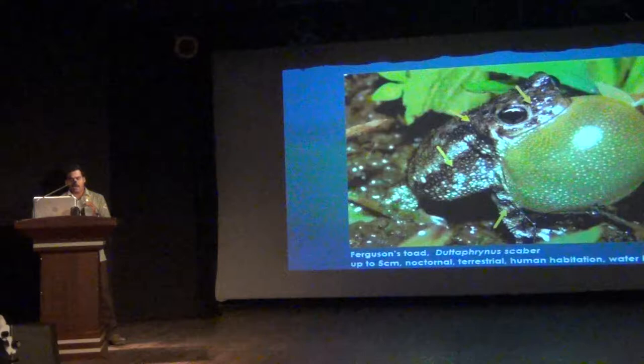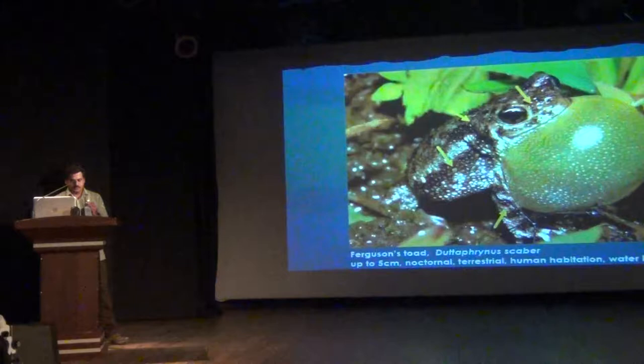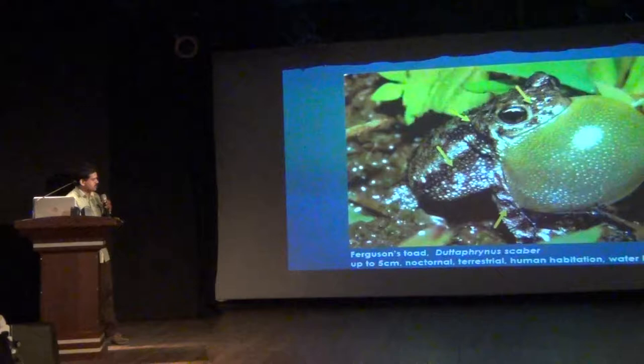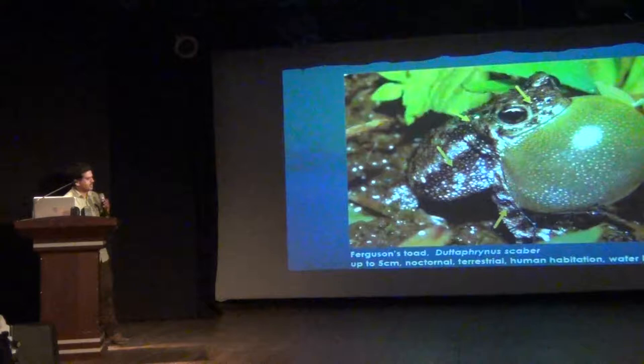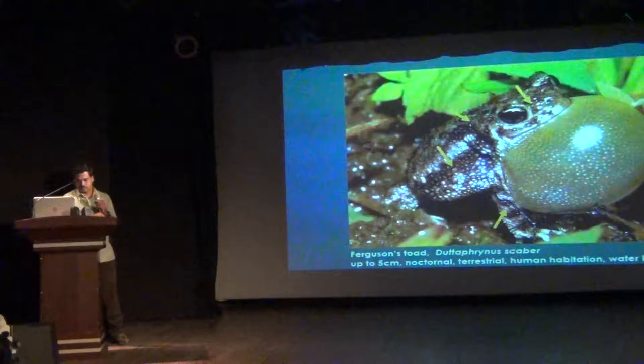Next is Ferguson's toad — again, one of the commonest toads in Bangalore and surrounding areas. The call pattern is something like this. If you look at the cranial ridge, there is no cranial ridge, but there are cranial dots. The entire body is spinular, and you have a parotid gland which is flattened in this species. It is small in size and is one of the common toads that can walk like a lizard.